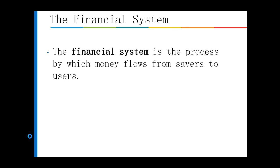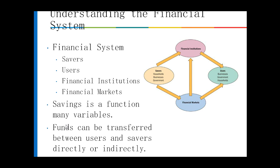The financial system is really a way money flows from savers to users. The first thing you need to understand is who is part of the financial system. We have savers, we have users, and we have the institutions and markets. Savers and users are comprised of households, government, and businesses depending on their role. We transfer funds between these two for purposes of savings or using those funds.